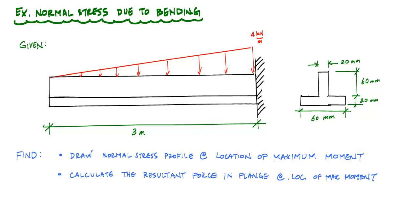I've got this cantilever beam with a constant cross-section — an upside-down T-beam with a linearly distributed load starting from zero to four kilonewtons per meter. What we want to find in this problem is to draw the normal stress profile at the location of the maximum moment, and then calculate the resultant force that's in the flange. Let's go ahead and get started.